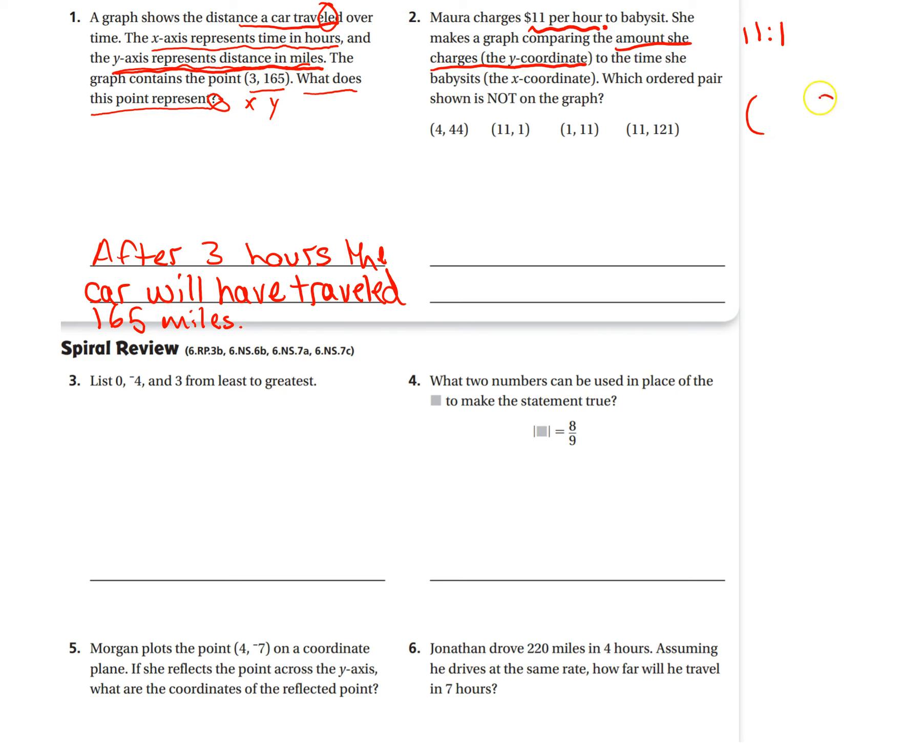So remember, if we're looking at coordinates, we have x, then y. To the time she babysits—time she babysits is the x. Which ordered pair shown is not going to be on the graph. So she already told us the amount she charges is her y. So she charges $11, and the time is her x.